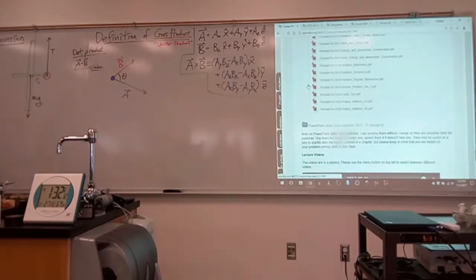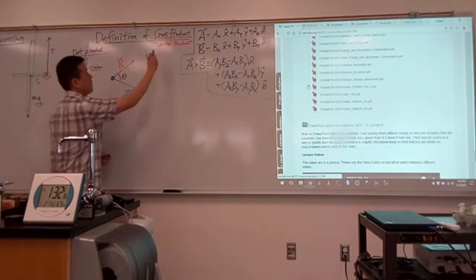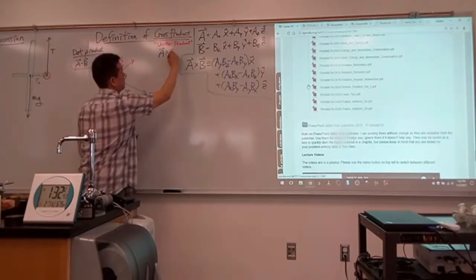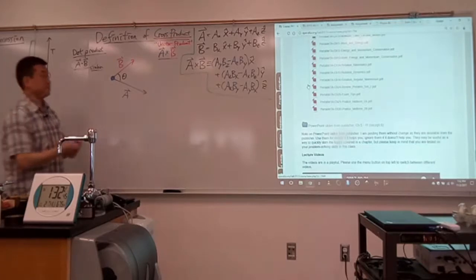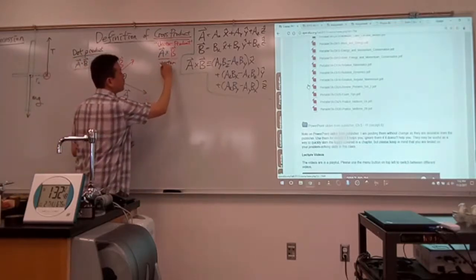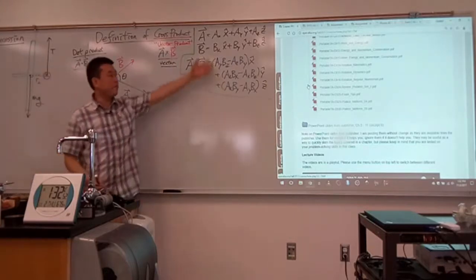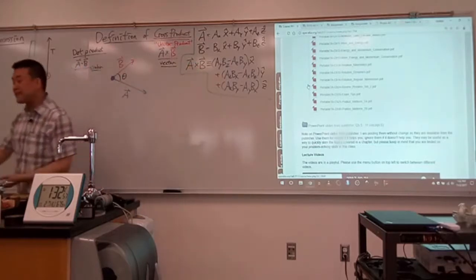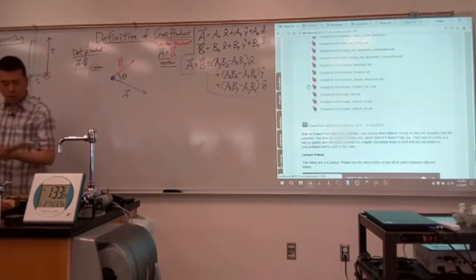The cross product — sometimes we call this the vector product. We call it vector product because this is a way of multiplying two vectors that's going to give me another vector back. It will give me another quantity that has magnitude and direction. So I'll get this vector product A cross B, and this will give me another vector back.